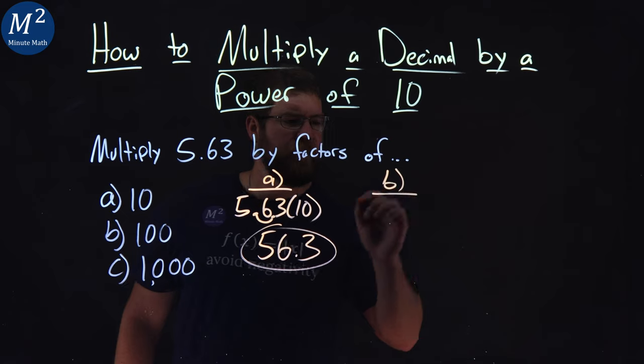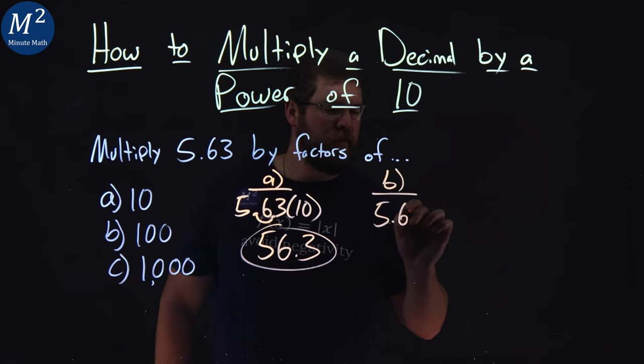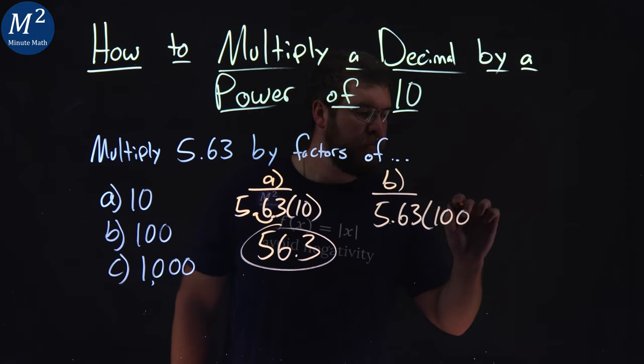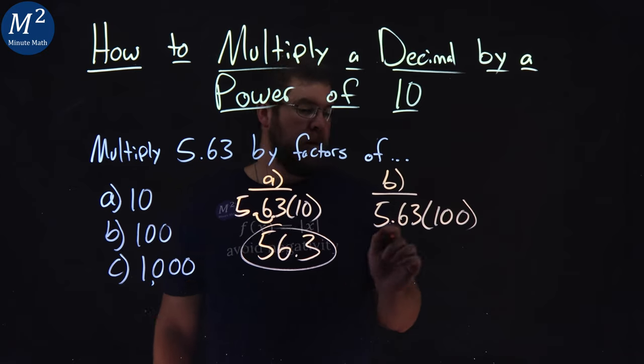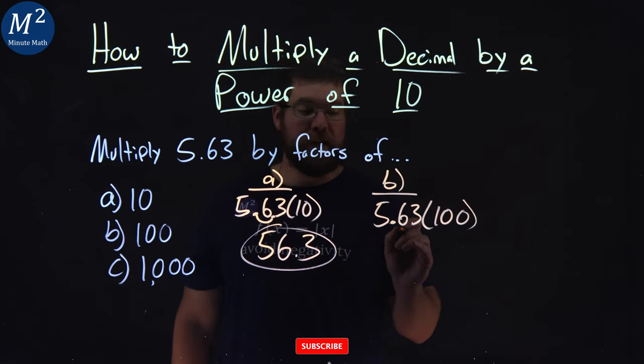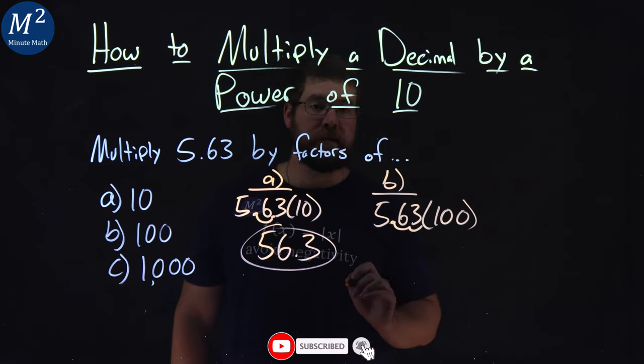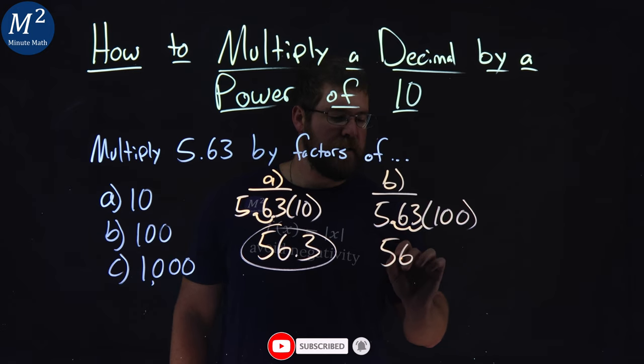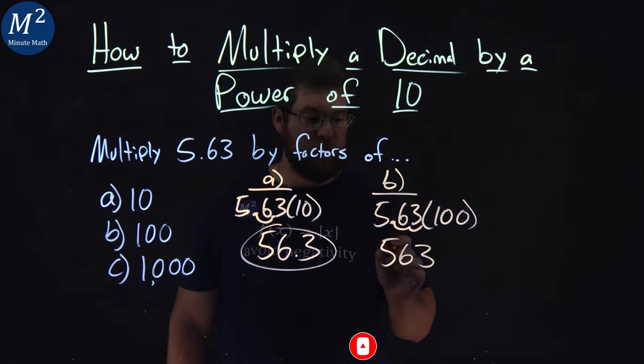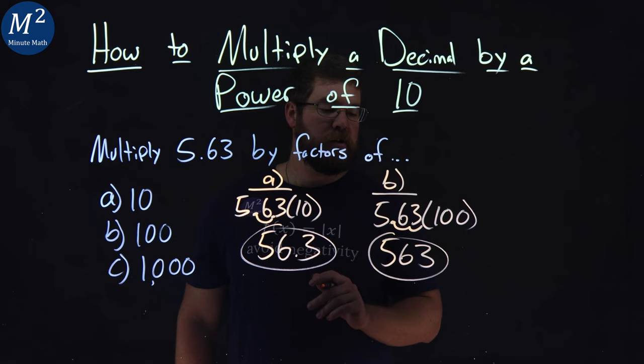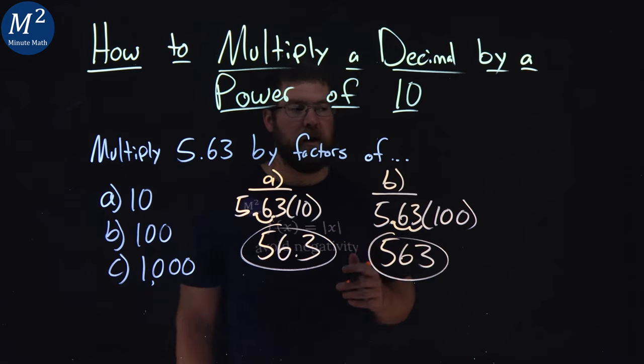Let's see that again with part B: 5.63 times 100. We see two zeros there, the same thing - move the decimal place over twice. So we have 5.63 here, and 563 now is the multiplication of 5.63 times 100.